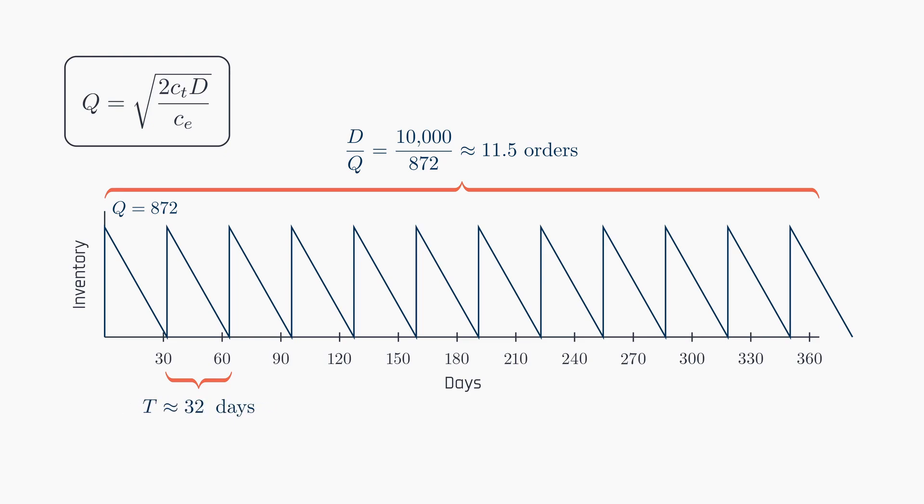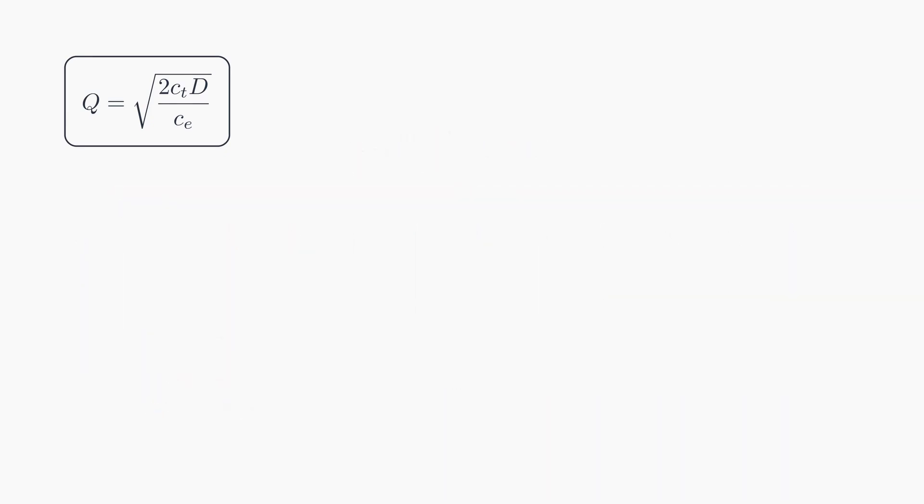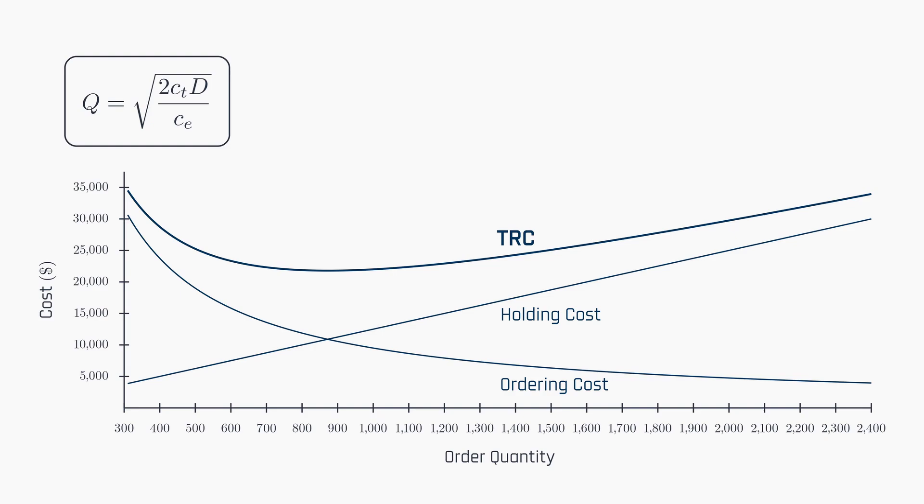Consequently, orders will be placed roughly every 32 days. While not precisely matching due to the rounding of Q, the holding and ordering costs are very close, and together they total $21,794.